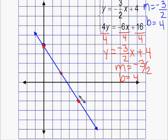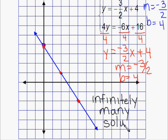Because every point on the line is an intersection point, there are infinitely many solutions.